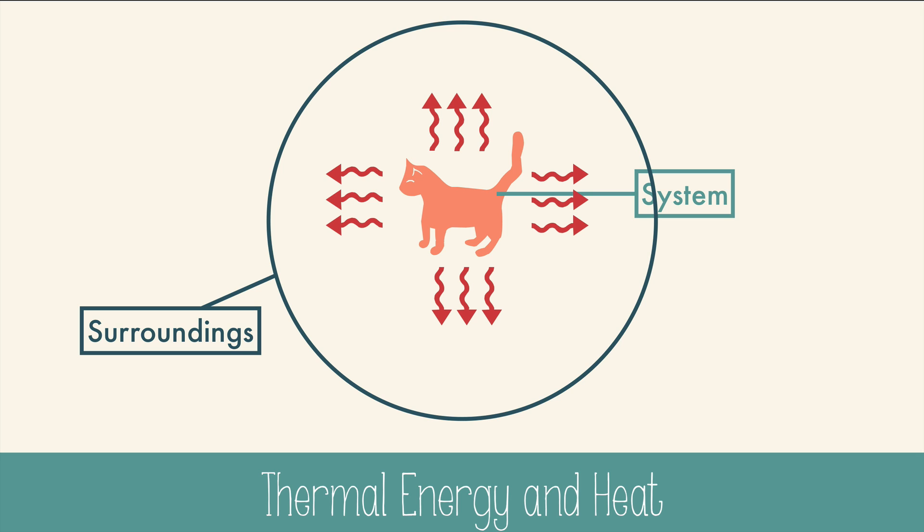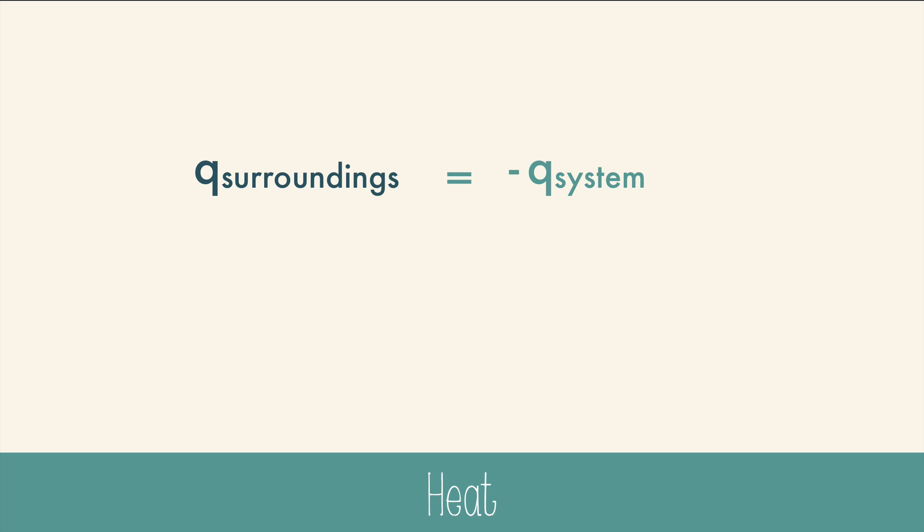To denote heat, we use the letter Q. I don't really know why, but that's what it is. The cat is giving away its heat, or losing its heat, so we say that the Q is negative. The Q of the surroundings is absorbing the heat that the cat is releasing, or gaining heat, so it stays positive. The amount of heat released by the cat will be equal to the amount of heat absorbed by the surroundings. This fact will become useful soon.